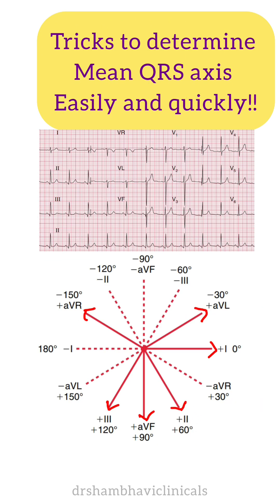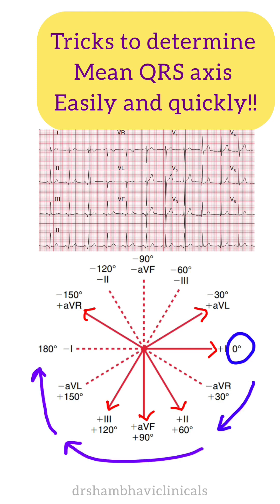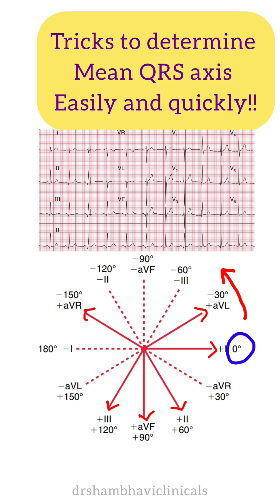Now look at this scale — this is very important. By convention, the positive pole of lead 1 is said to be at 0 degrees. All the angles below lead 1 are positive, and all the angles above lead 1 are considered as negative.